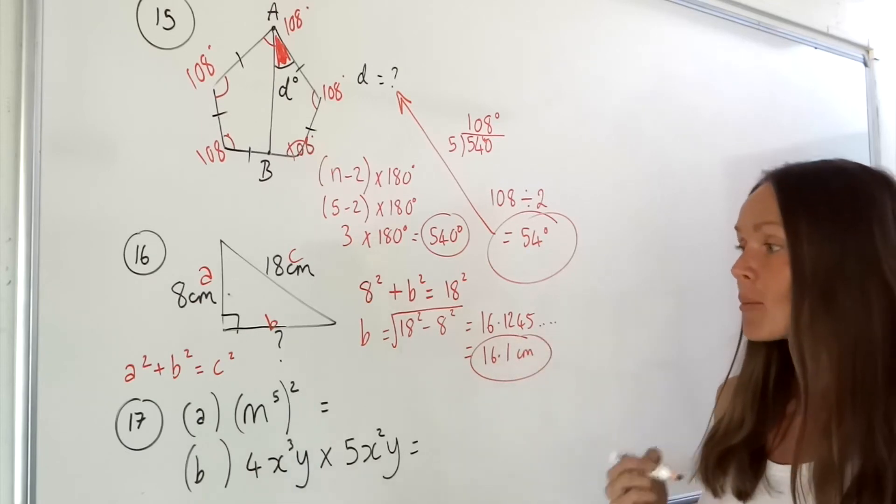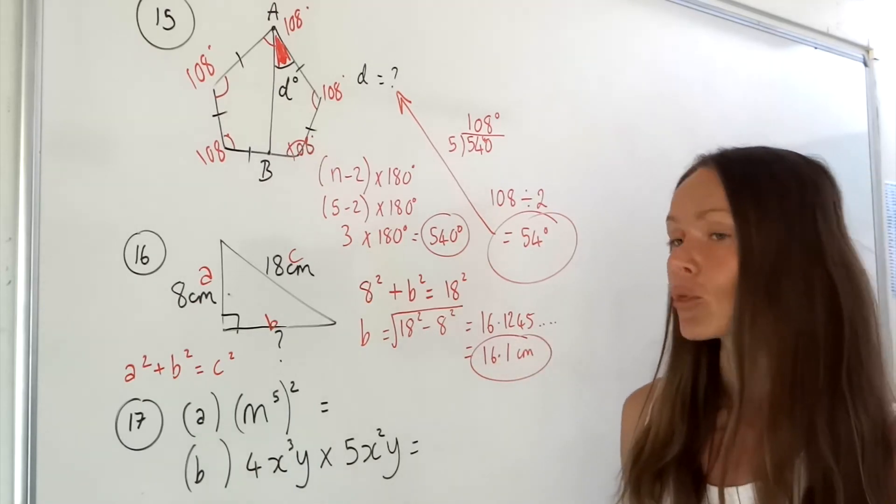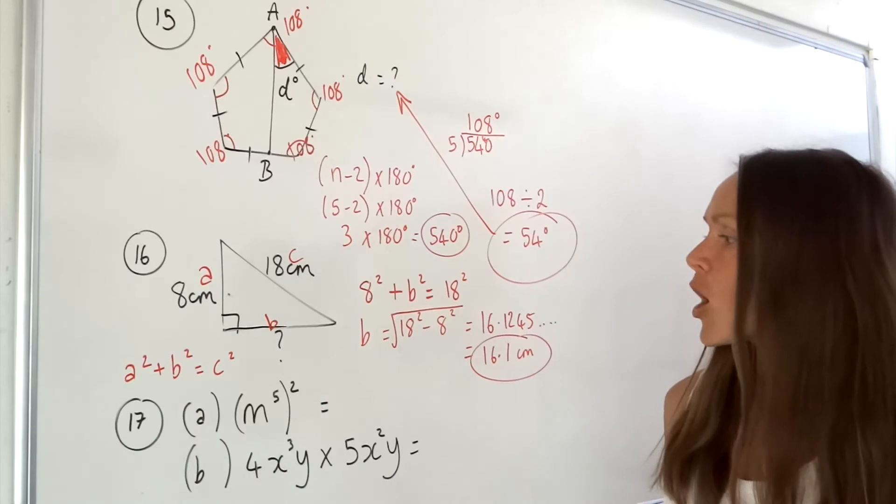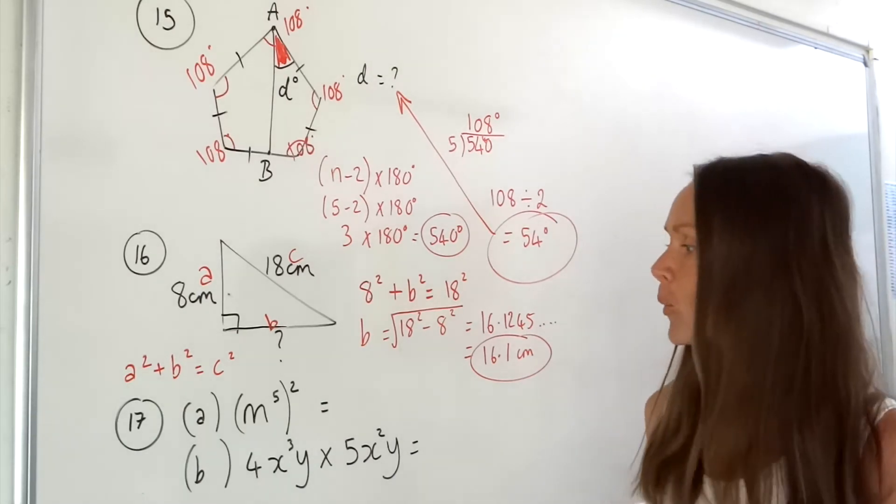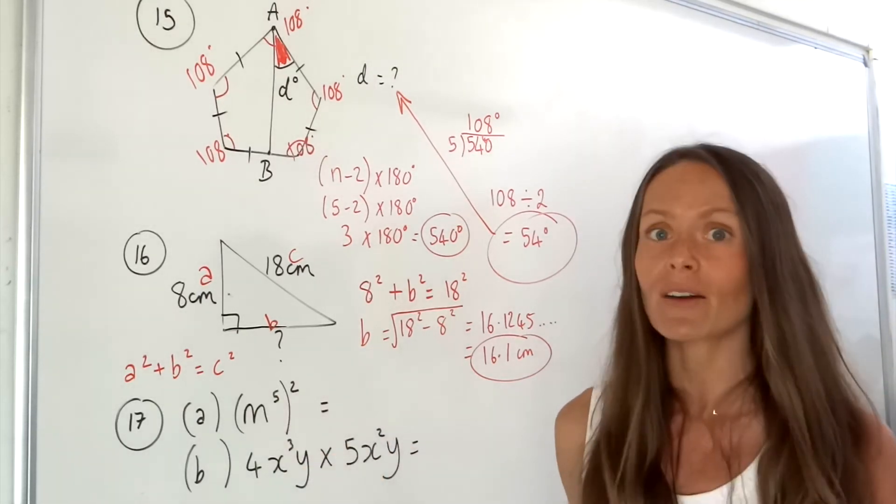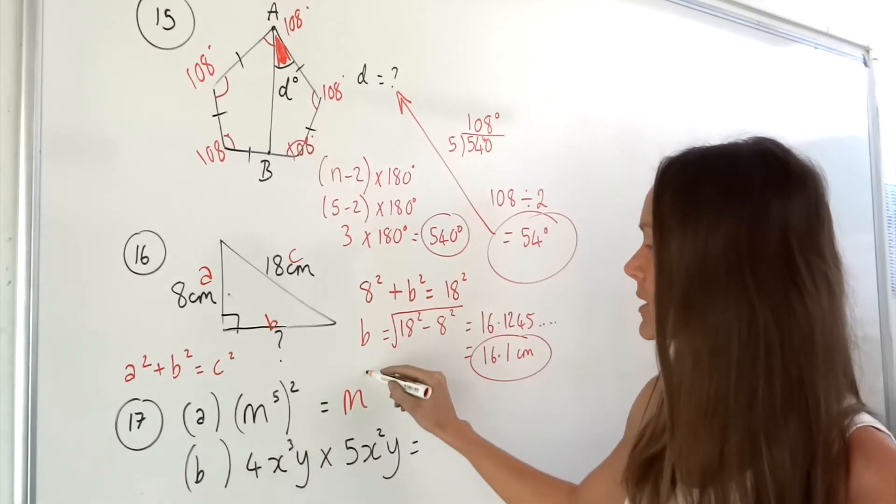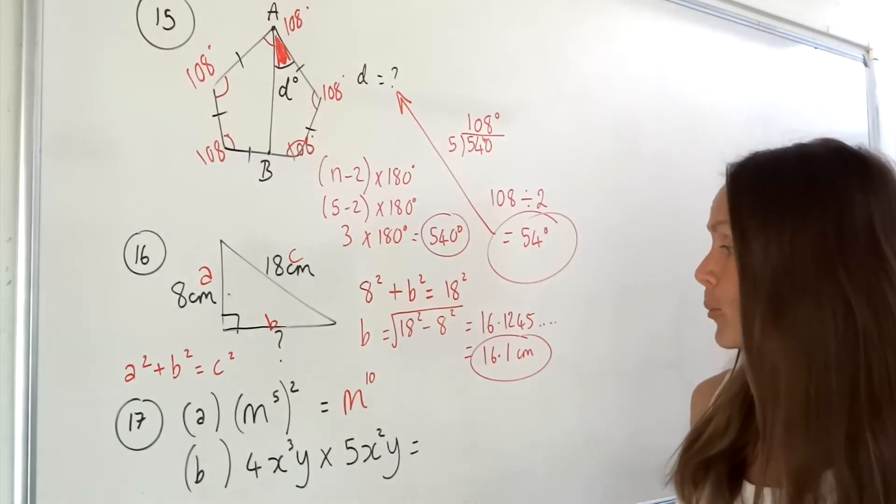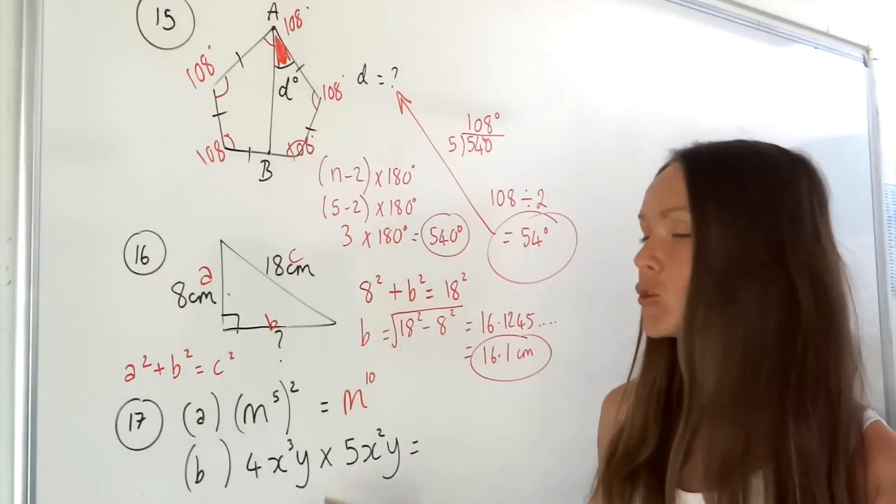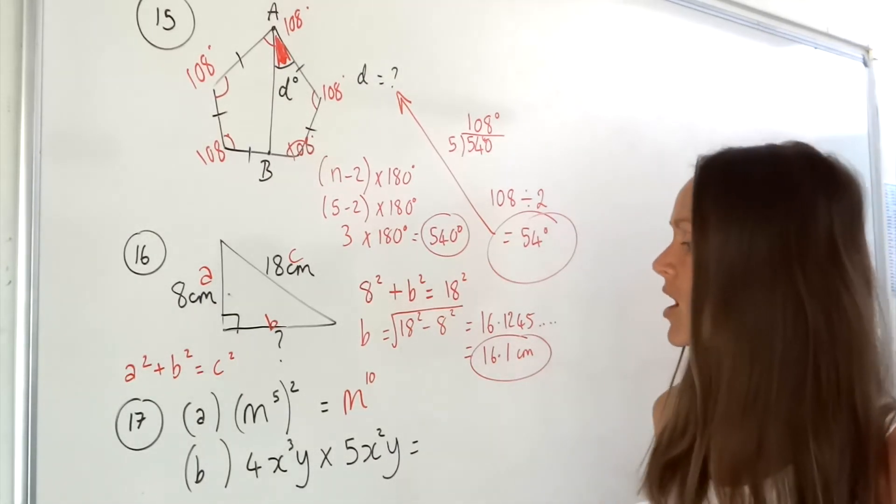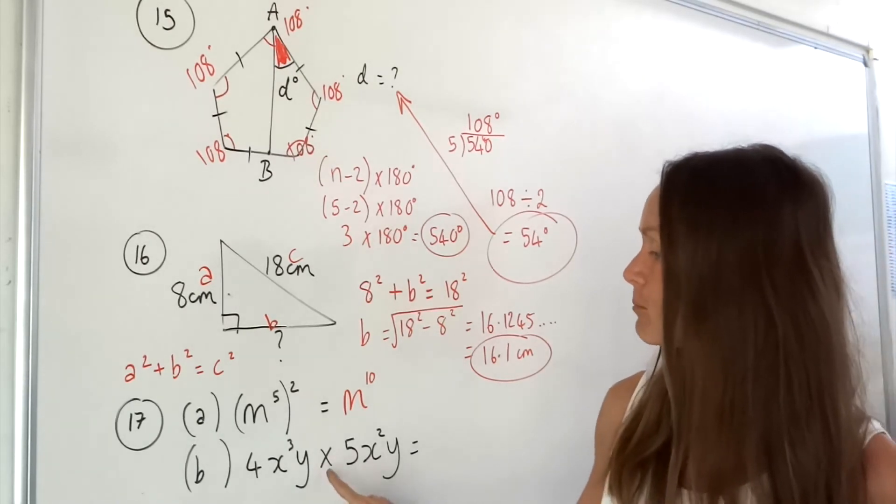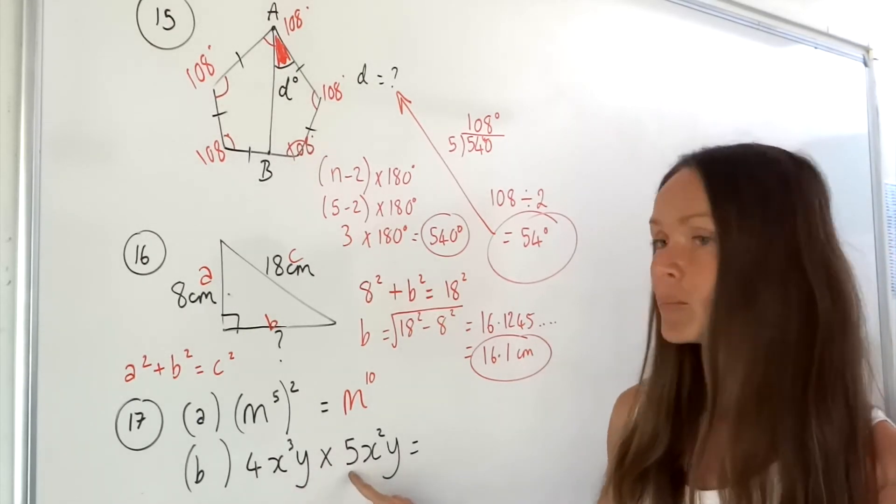Number 17, it's the rules of indices. Hopefully you remember the rules. Whenever there are brackets you have to multiply the powers together, so for the first one five times two is ten. For part b when you're multiplying you have to add the powers.